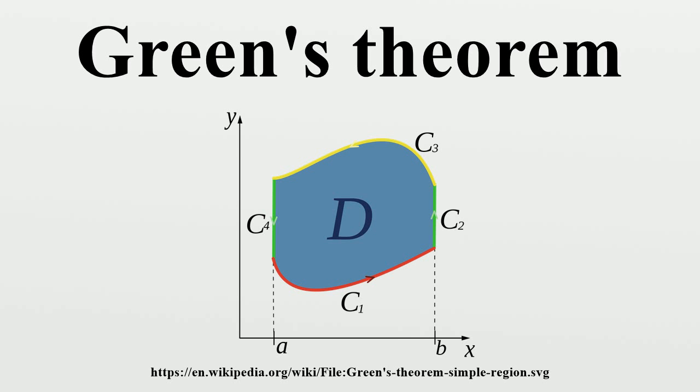Green's theorem then follows for regions of type 3. Assume region D is a type 1 region and can thus be characterized, as pictured on the right, by where G1 and G2 are continuous functions on A, B.